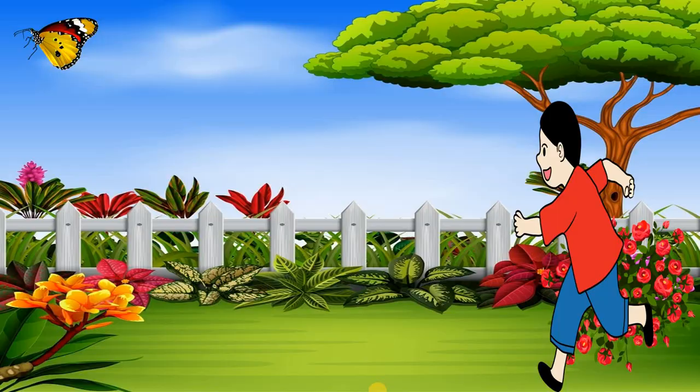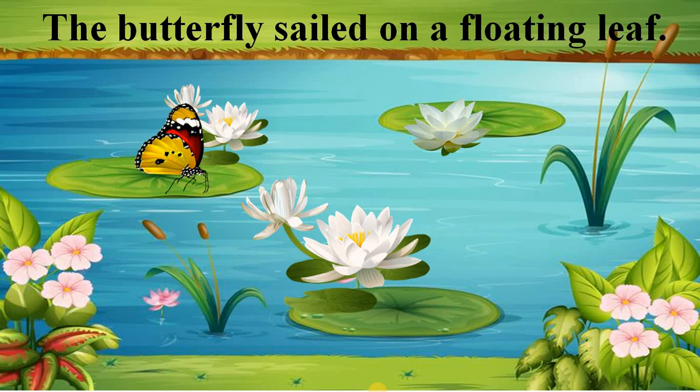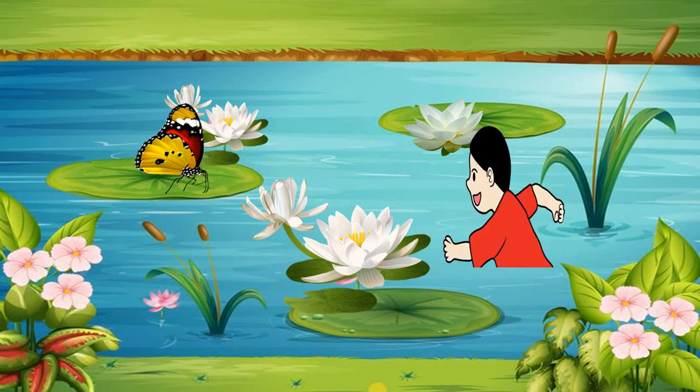Sonu ki garden ke paas ek pond hai. Us pond mein white lotus thay. Lotus ke charo aur round leaves thay. And the leaves were floating in the water. Here, floating means to move on surface. The butterfly sailed on a floating leaf. Here, sailed means to travel on water. Sonu ne butterfly ko pond mein dekha. Or ushe catch karne ke liye pond mein jump kar diya.